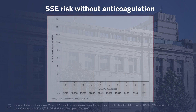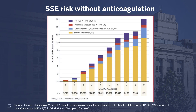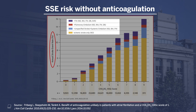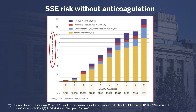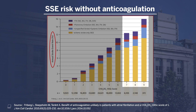The CHADS-VASc score can be used to roughly predict the patient's annualized risk of stroke or systemic embolism. This was demonstrated in a large Swedish registry study of patients diagnosed with AFib but not exposed to warfarin. They identified over 140,000 patients and quantified their thromboembolic risk, using a broad definition including stroke, TIA, pulmonary embolism, or systemic embolism. As the CHADS-VASc score increases, stroke risk increases significantly, with an annualized risk up to 10 to 12 percent for patients with the highest scores.